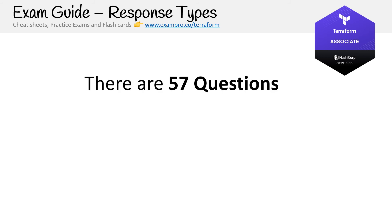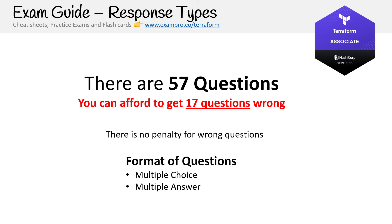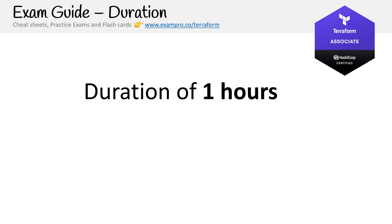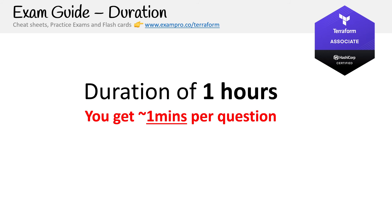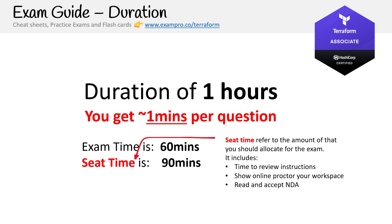There are 57 questions, which affords about 17 questions you can get wrong, and there's no penalty for wrong answers — so always take a guess. The format includes multiple choice, multiple answer, and fill-in-the-blank, where you type a single-word answer. For example, they might ask the name of the Terraform state file and you'd write terraform.tfstate. The exam duration is one hour — plenty of time — but your seat time is 90 minutes, as you show up 30 minutes early to review instructions, work with your online proctor, accept the NDA, and complete the exam.